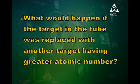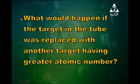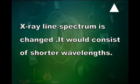What would happen if the target was replaced with another target having a greater atomic number? This will affect the line spectrum of X-rays. When replacing the target, the line spectrum will be changed. Replacing it with a target of greater atomic number means the X-ray line spectrum would consist of shorter wavelengths.